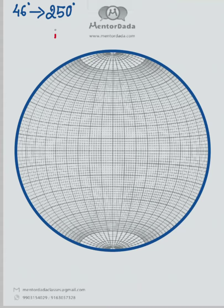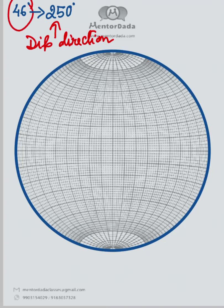So we have two things: one is the dip amount and another one is the dip direction. So how to plot it?